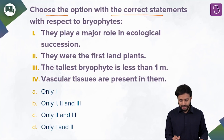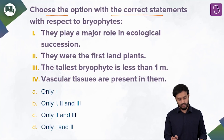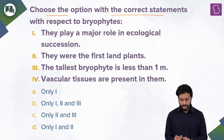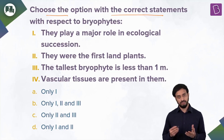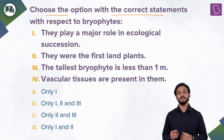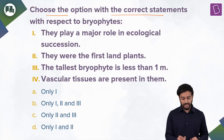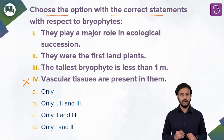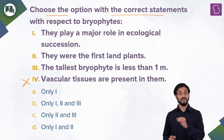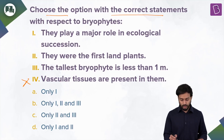Statement one: bryophytes play a major role in ecological succession. Statement two: they were the first land plants. Statement three: the tallest bryophyte is less than one meter. Statement four: vascular tissues are present in them. The last statement is absolutely wrong because they are avascular — they do not have xylem or phloem. So statement four is wrong.